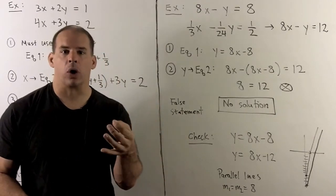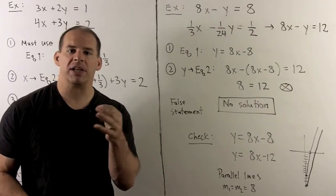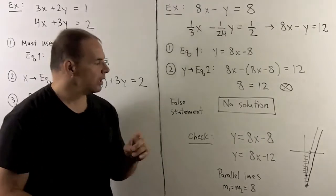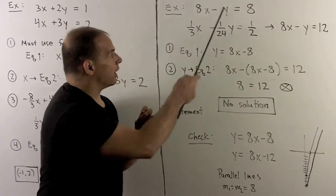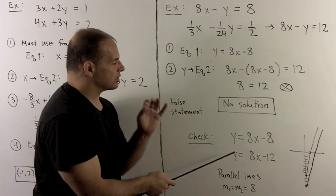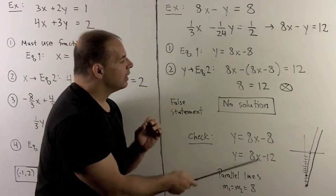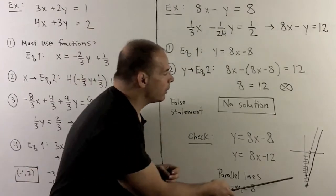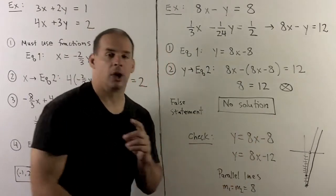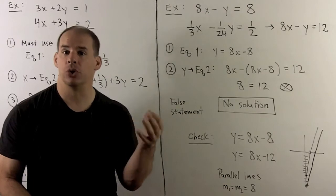That means we have no solution. If we want to check our work here, there's no point to check. The best I can do is just to graph the lines. And we know when we do that, we'll have the same slope when we isolate y in both cases to get slope-intercept form. The intercepts, the y-intercepts are going to be different because they have different b's. So, we wind up with parallel lines. If there's no point of intersection, there's no solution.